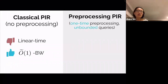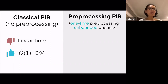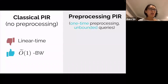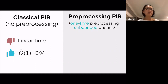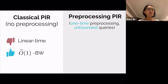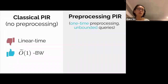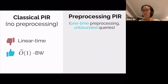This motivated a promising new direction: PIR in the preprocessing model. The preprocessing model was first suggested by Beimel, Ishai, and Malkin, who showed that by using preprocessing, we can overcome the linear server computation lower bound. In this talk, we'll focus on a particular type of preprocessing, which I call the subscription model. Imagine each client who wants private DNS service subscribes with the server. During the subscription, the client downloads and stores some hints locally. Afterwards, with the help of the hint, hopefully we can answer each online query with sublinear computation. We always want the ability to support an unbounded number of queries after the one-time preprocessing.